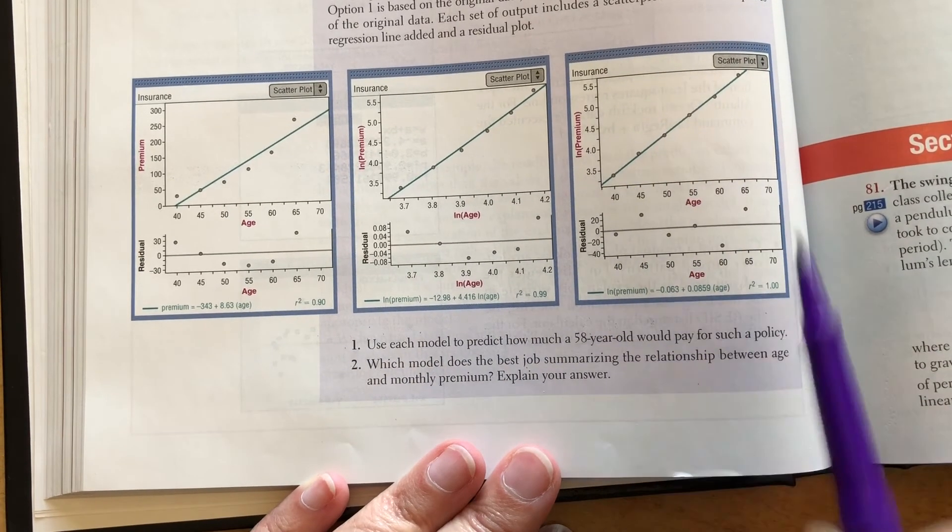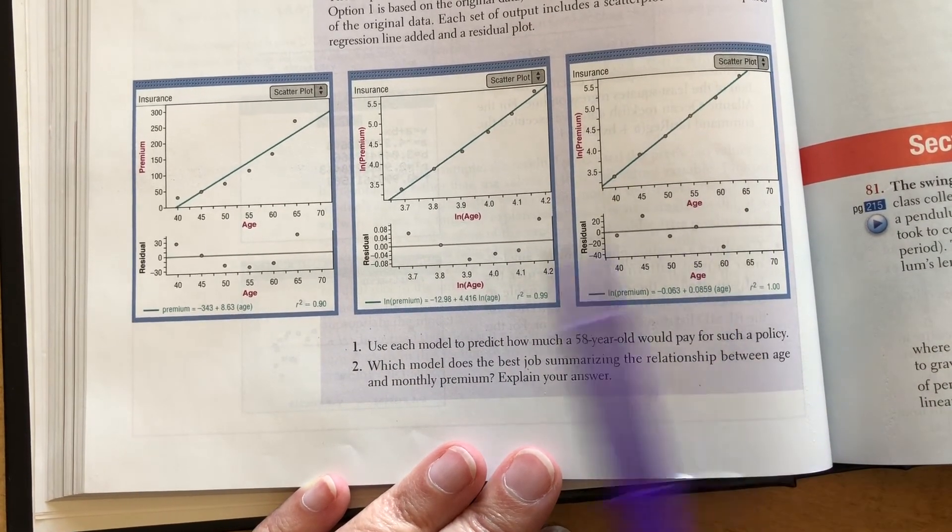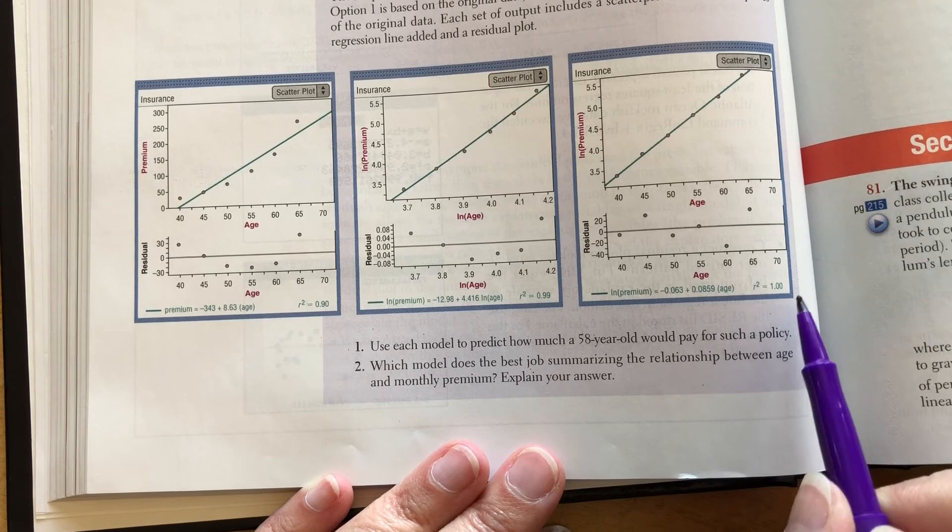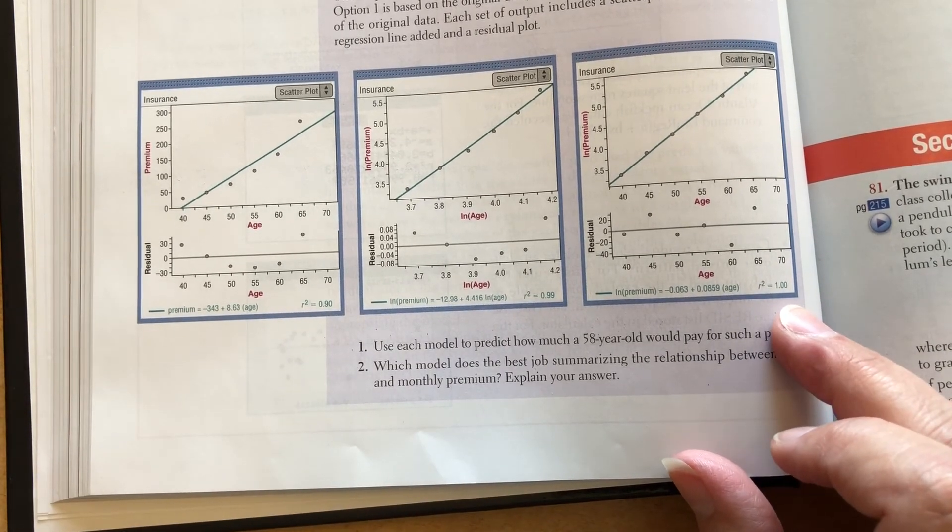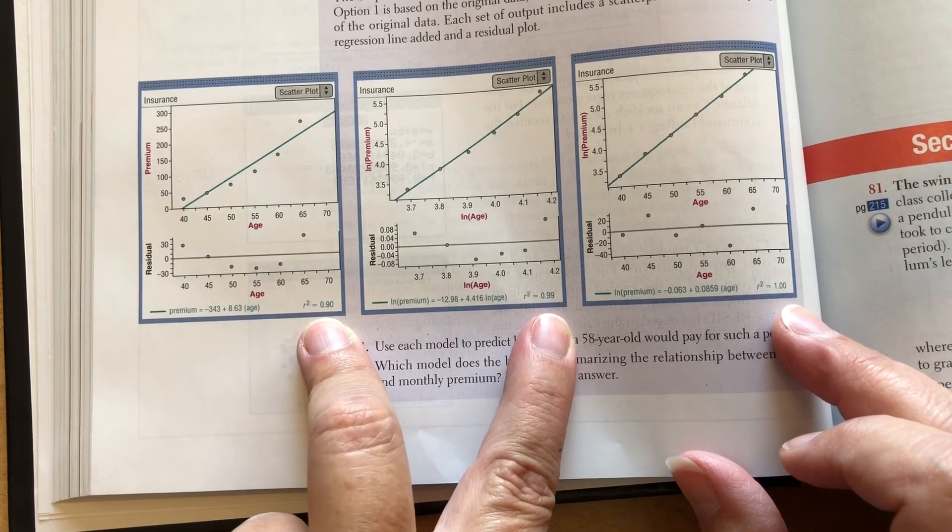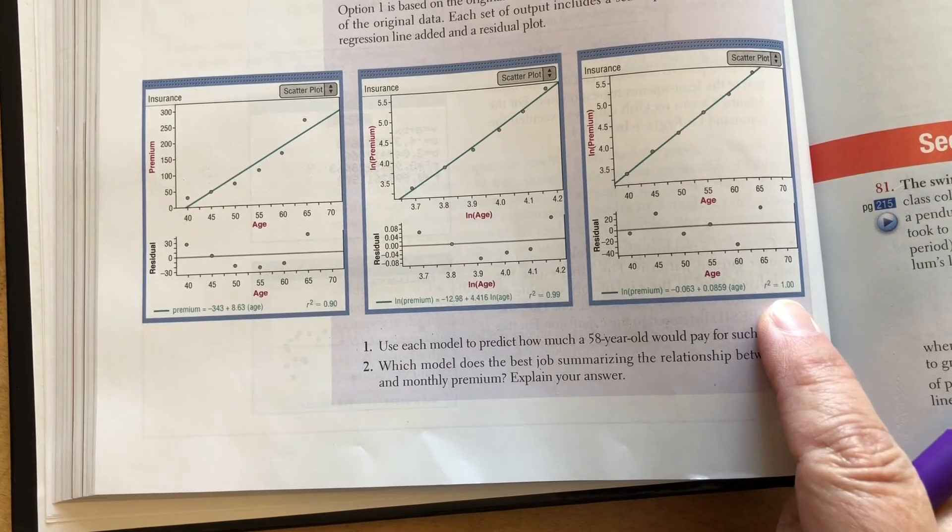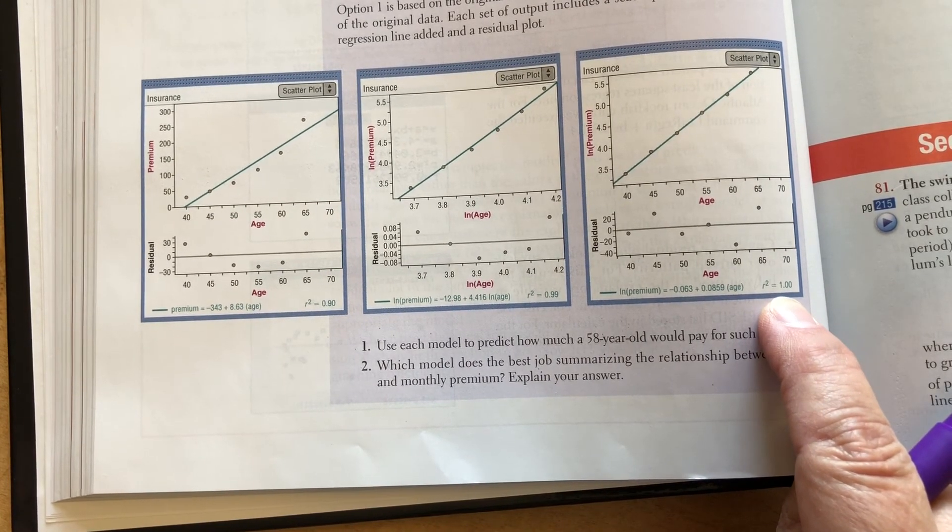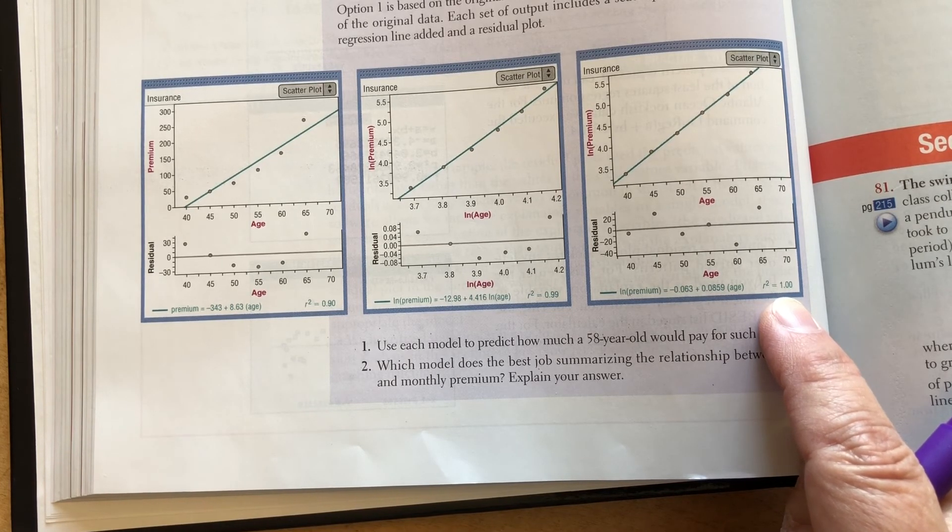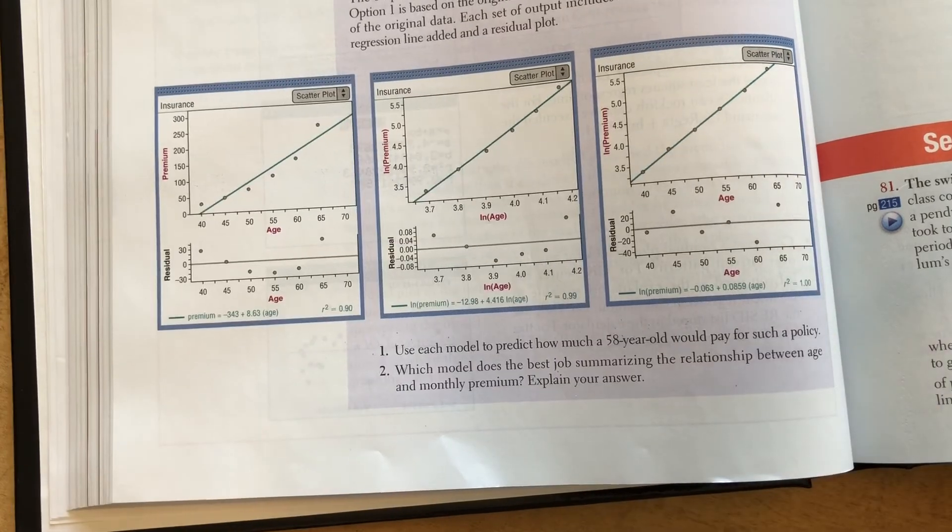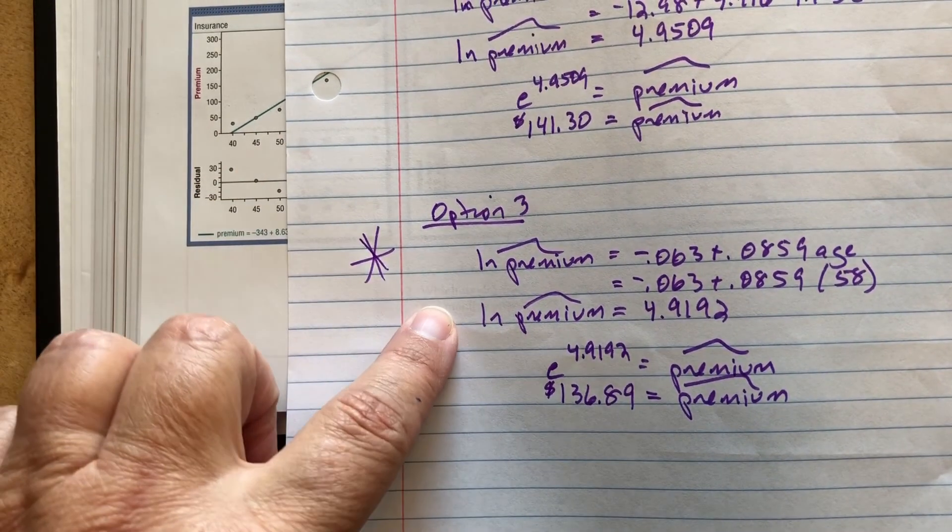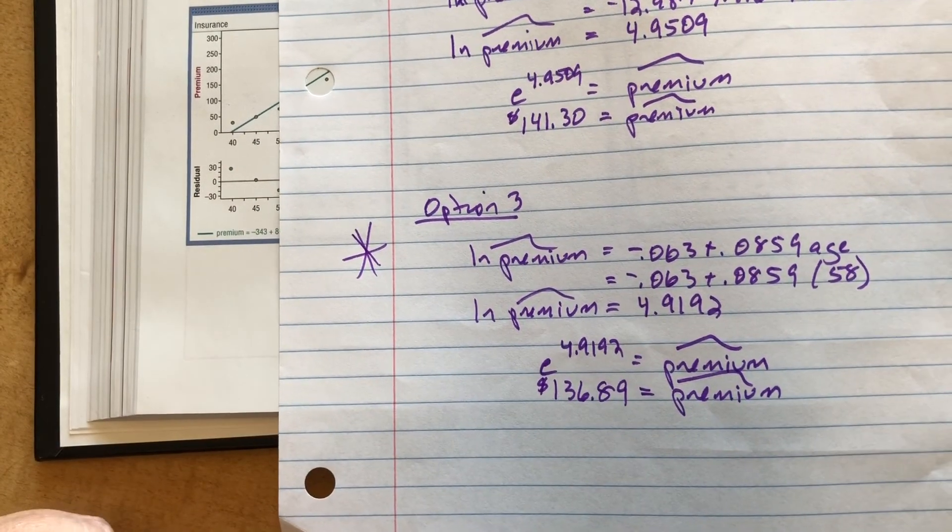So I'm going to go with option 3 because the residual is the most scattered. These have a clear curve pattern. And my R squared, well, if I found correlation, I would square root it. Well, the square root of 1 is 1. And the square root of these two would be something less. So this has the strongest correlation and the strongest coefficient of determination. My R squared is closest to 1 or 100%, which means my correlation would be closer to 1. So I'm going to go with option 3 as my best prediction. So I should natural log the premium and keep the age as is.